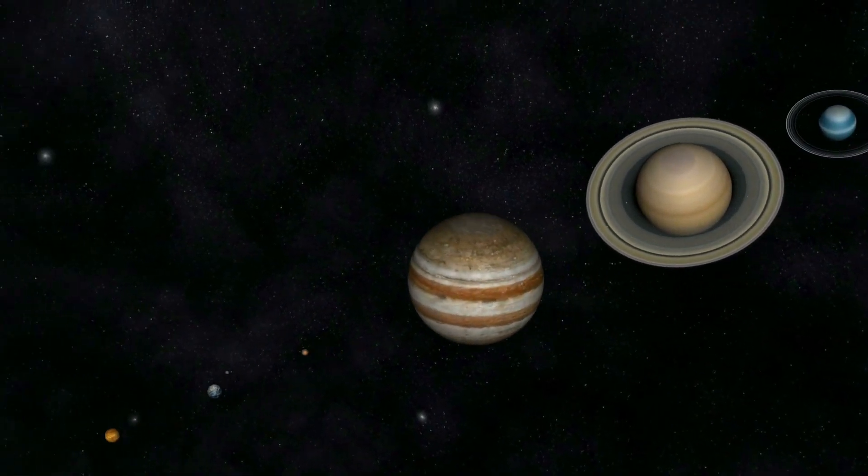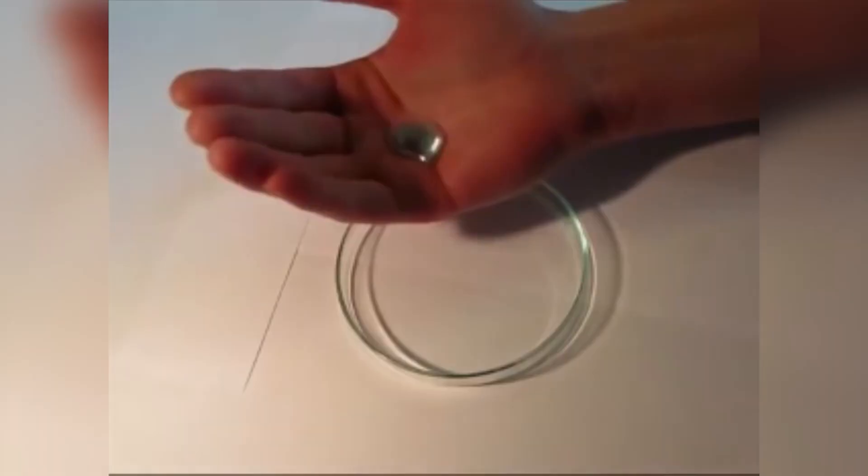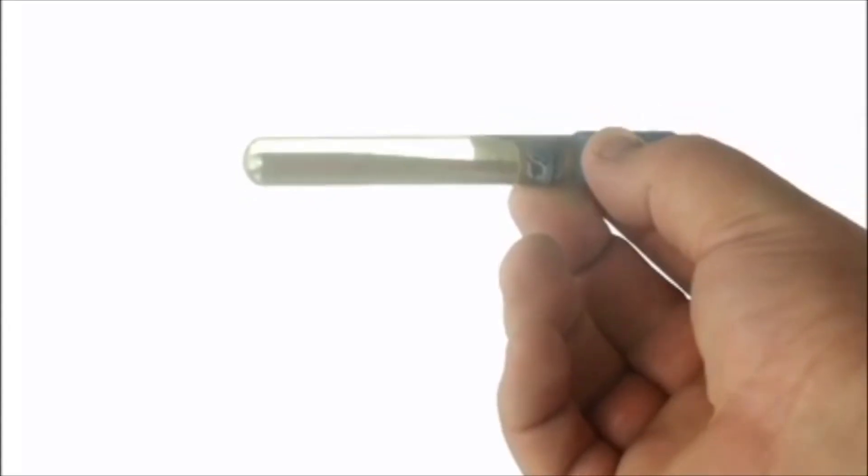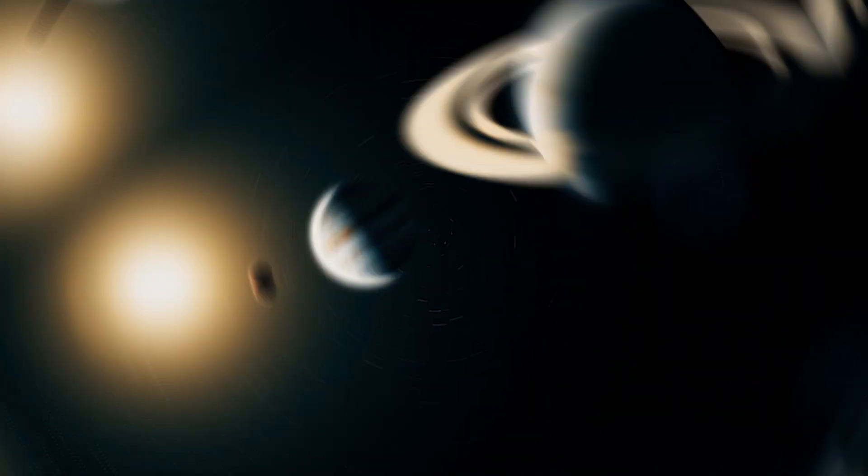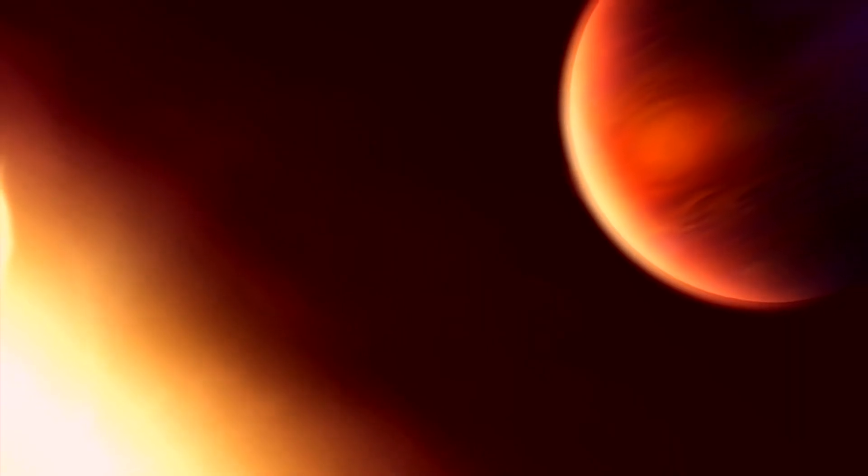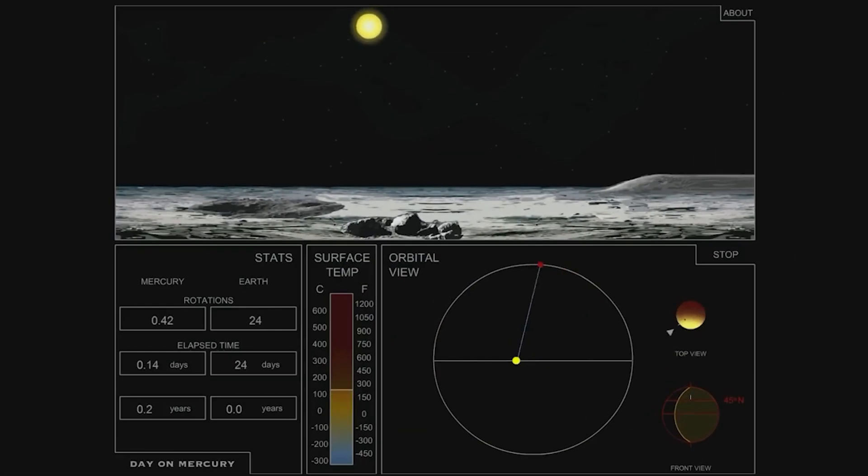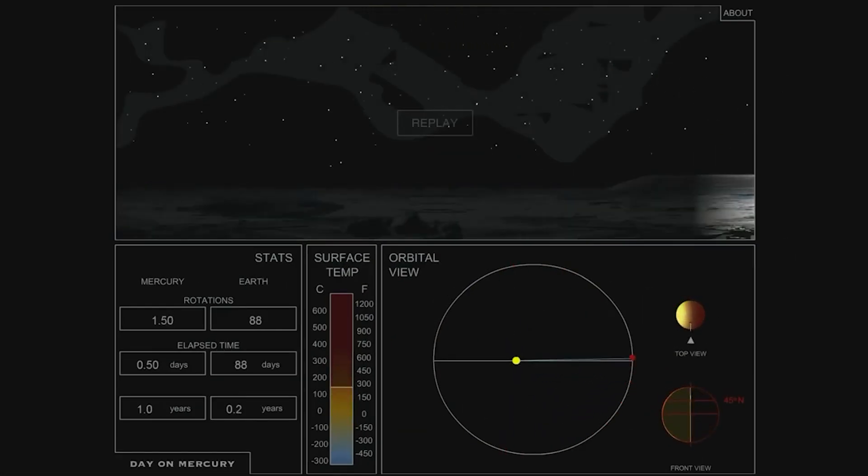In addition, some craters on Mercury remain perpetually shrouded in darkness, providing a perfect environment for ice to remain preserved. Furthermore, the absence of a substantial atmosphere on Mercury means that its surface temperatures experience extreme fluctuations, soaring during the day and plummeting at night.